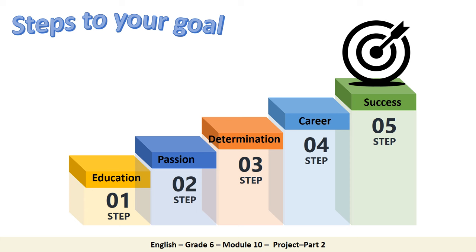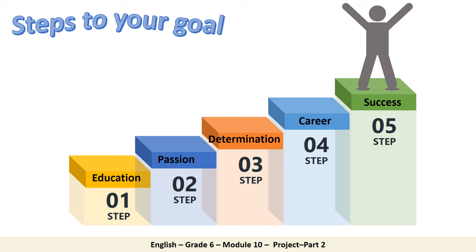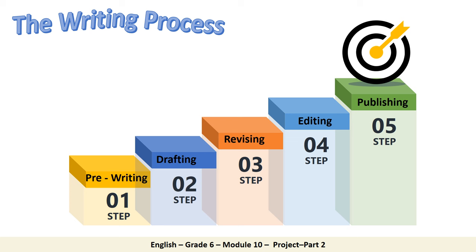Life is a journey and throughout life we take steps to reach our goal. Each step helps us grow and become who we are meant to be. Like life, writing goes through a defined set of steps so we can reach the finalized piece of writing. In today's lesson, we will use the five steps of the writing process in order to write about a person you admire.